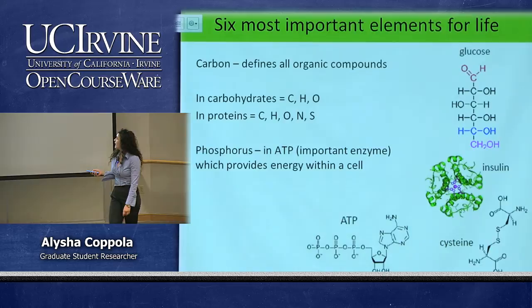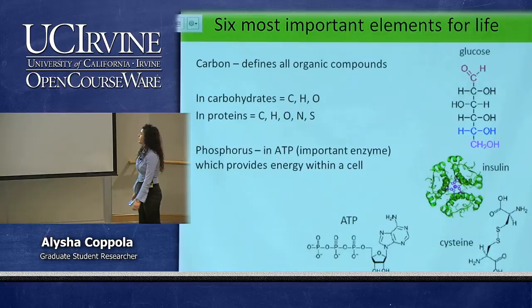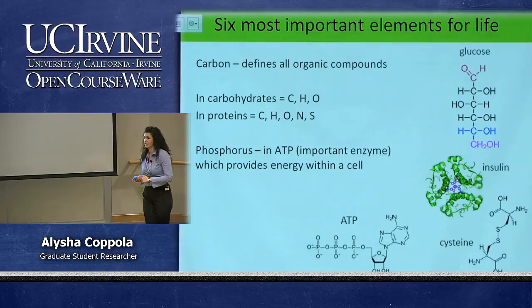Carbon is most important because it makes up all organic compounds. It's in carbohydrates, proteins, and amino acids, and involves hydrogen and oxygen as well. Nitrogen is also important. Phosphorus is important in ATP and ADP, which is important for getting energy within the cell.